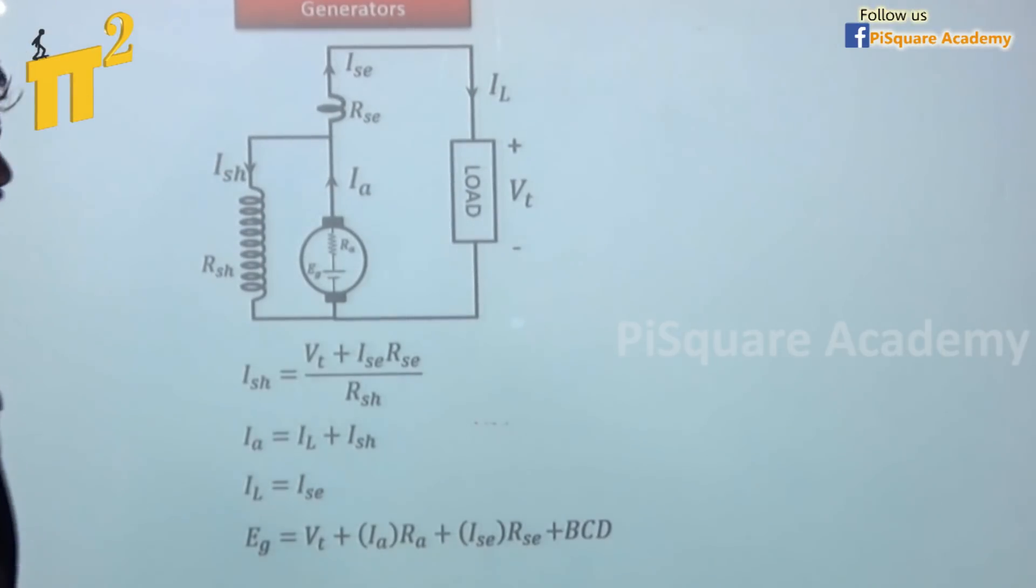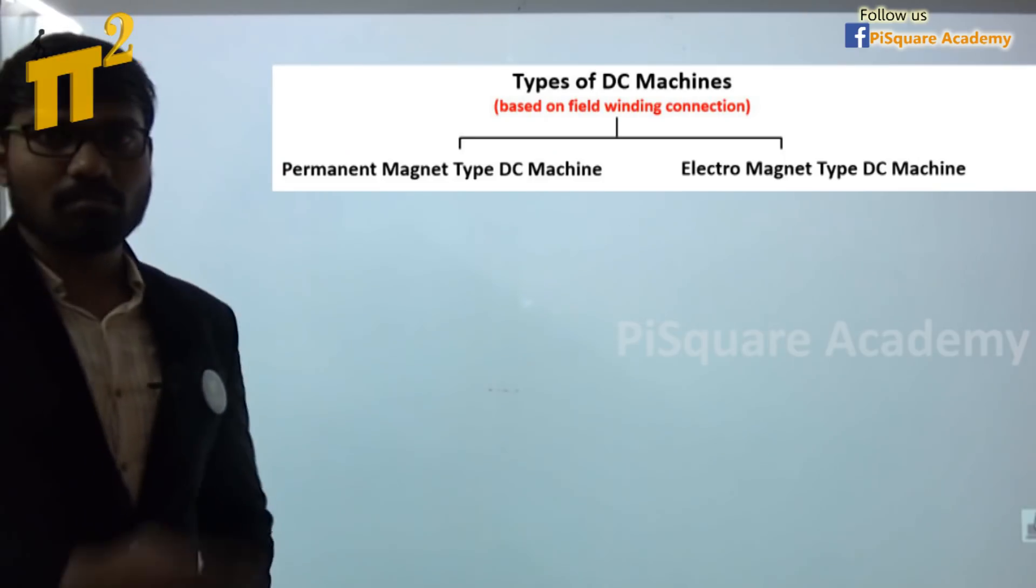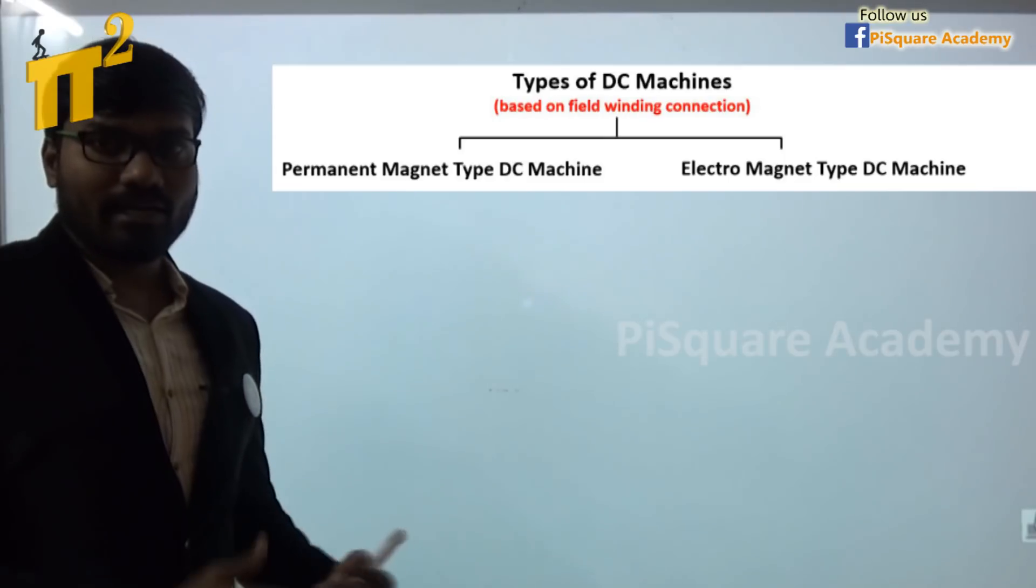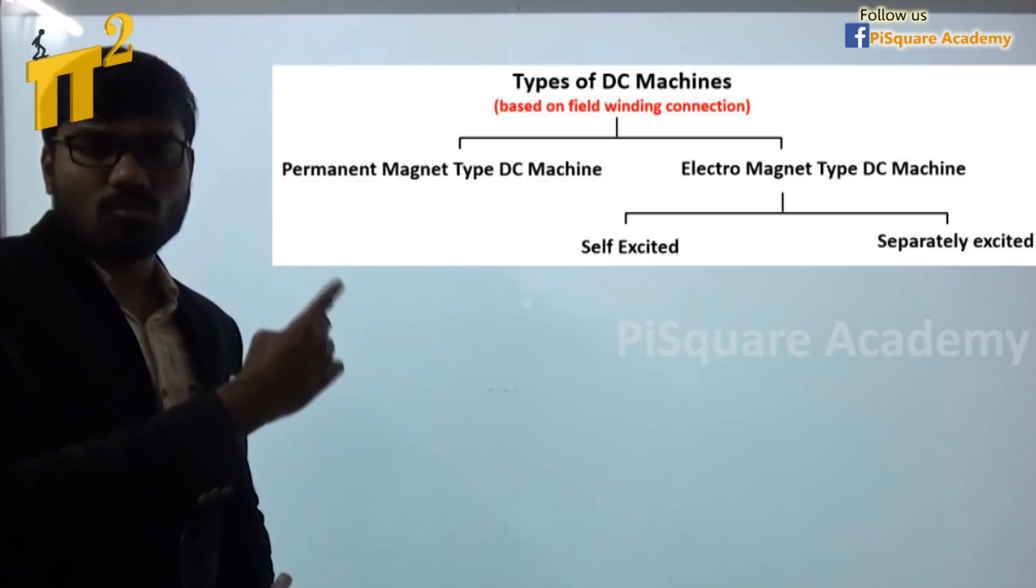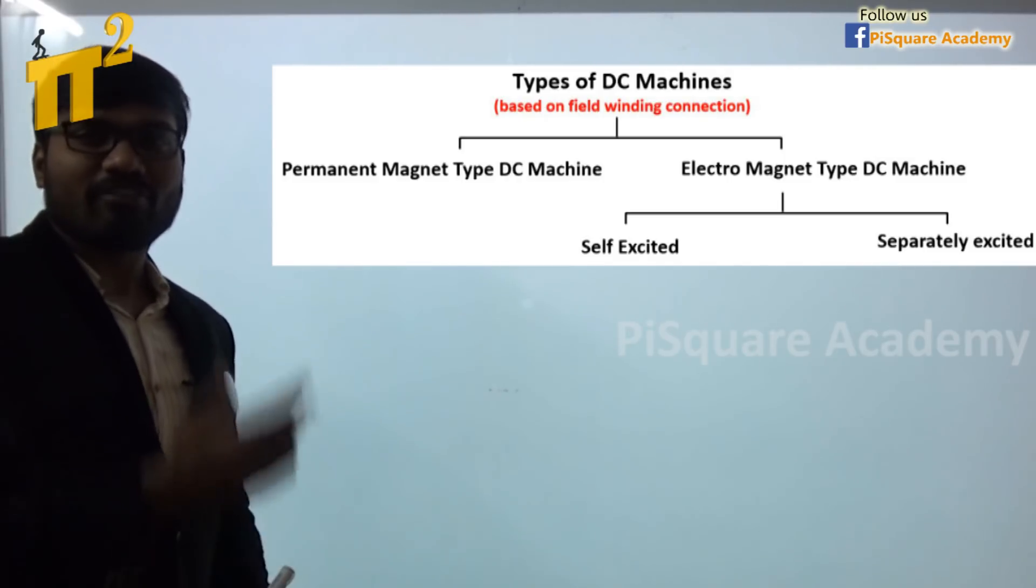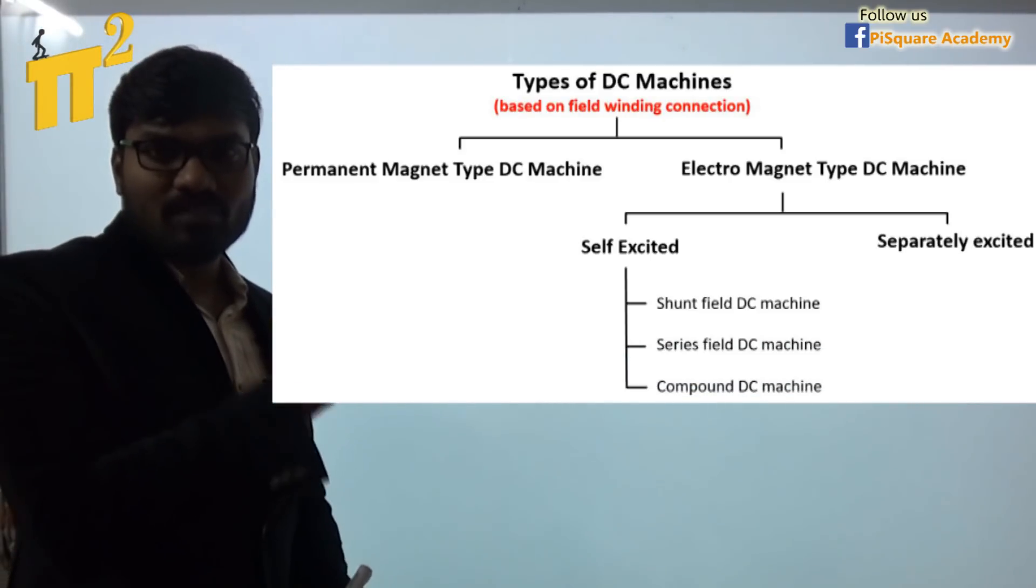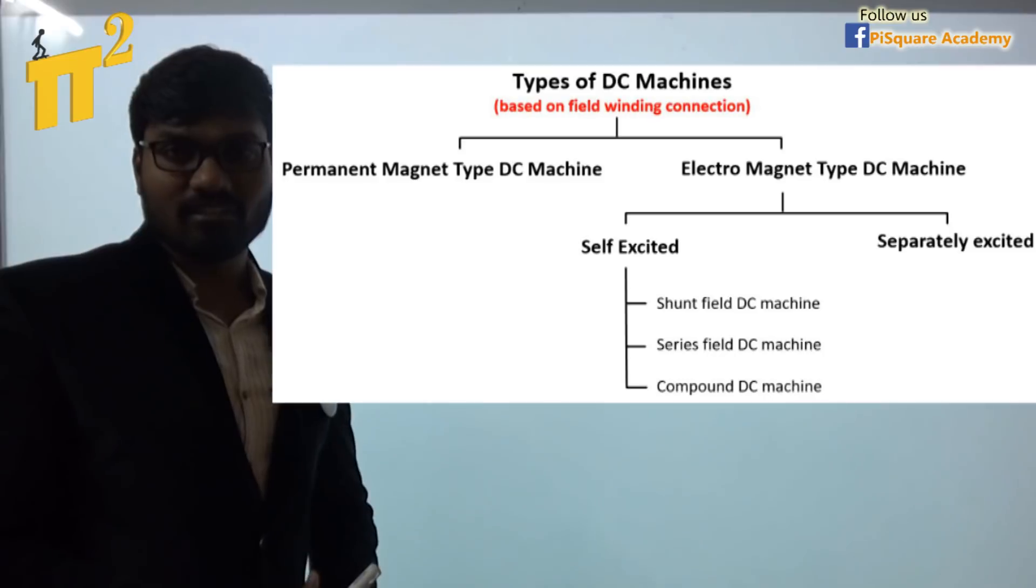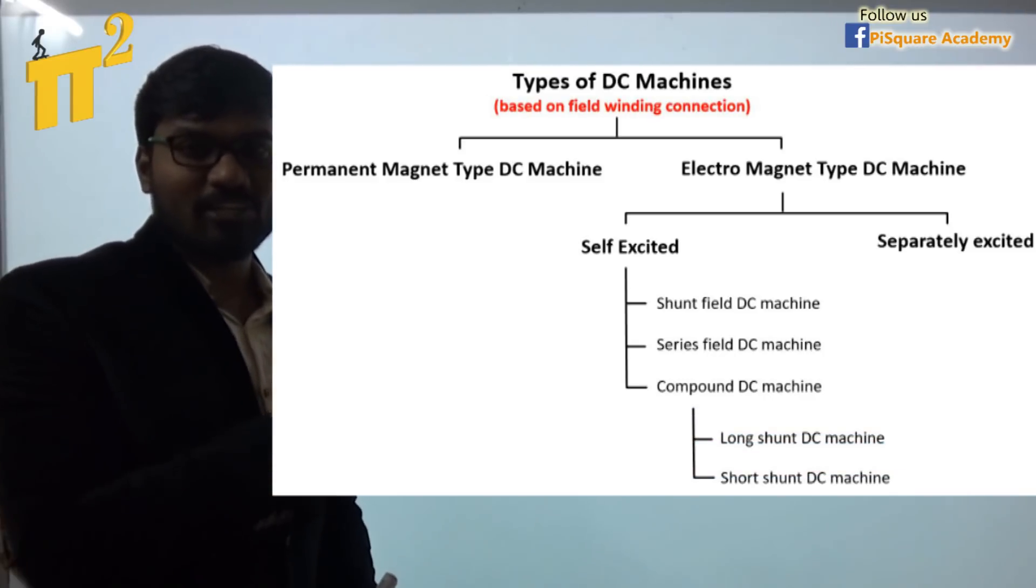So from the discussion, we can classify DC generators as two types. One is a permanent magnet DC generator and electromagnetic type DC generator. Electromagnetic type can be further classified into two categories - one is separately excited, another one is self-excited. Self-excited again can be classified as three categories: shunt field, series field and compound field. Again in compound, we have two more categories: long shunt and short shunt.